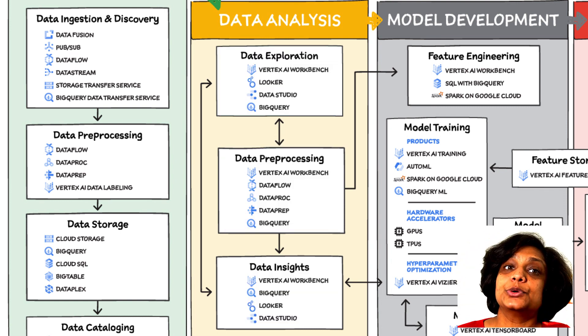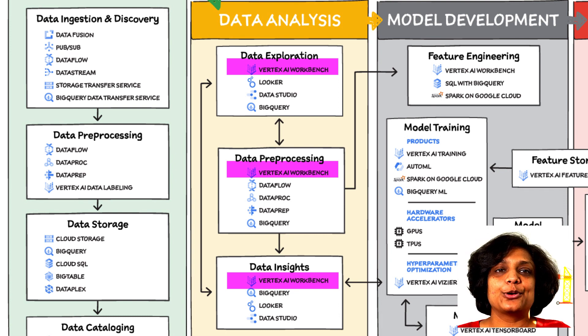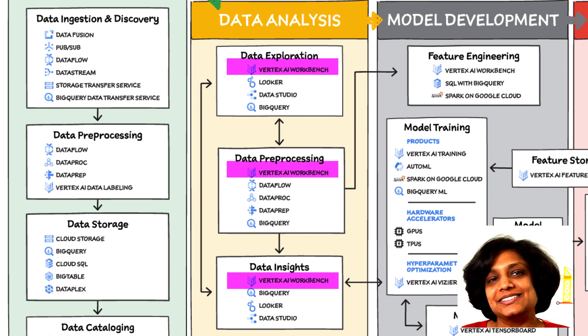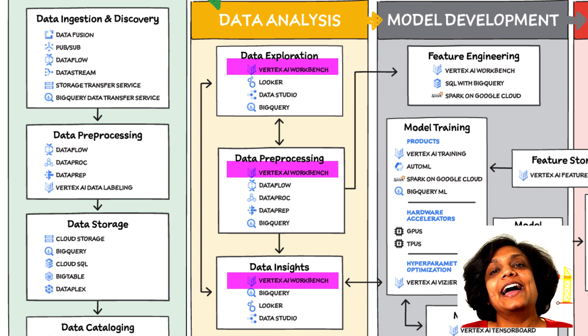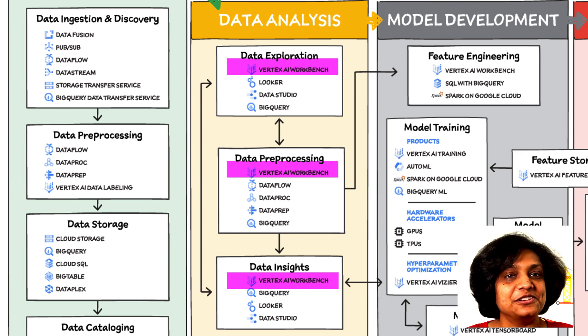On Google Cloud, there are many ways to explore, pre-process, and uncover insights in your data. If you're looking for a notebook-based, end-to-end data science environment, check out Vertex AI Workbench, which enables you to access, analyze, and visualize your entire data estate — from structured data at the petabyte scale in SQL with BigQuery, to pre-processing data with Spark on Google Cloud. Its serverless, auto-scaling, and GPU acceleration capabilities are amazing, so you don't have to worry about managing any of that.